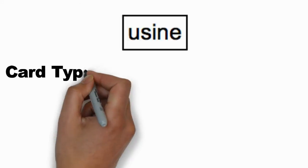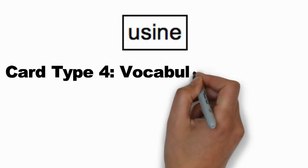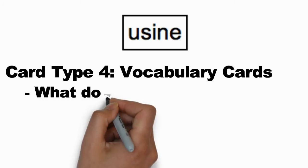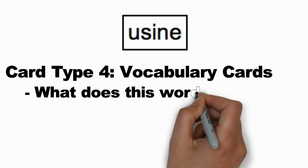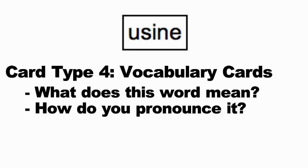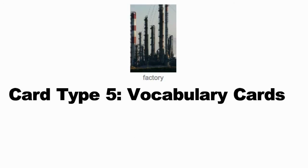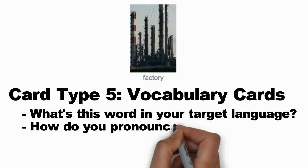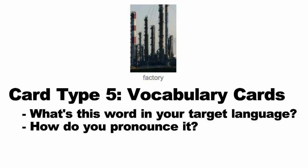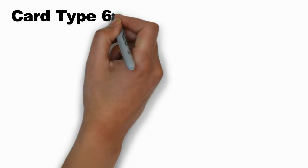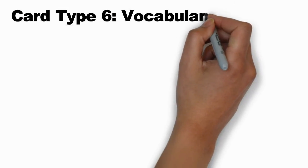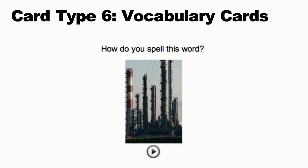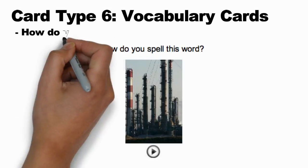The final three flashcard types are simple vocabulary trainers. One card will show you a word and ask you to remember what it means and how to pronounce it. Another will show you a picture of that word along with its translation, and you'll need to remember how to pronounce that word in your target language. The last card will show you a picture of that same word and play a recording — you'll need to remember how to spell it in your target language.